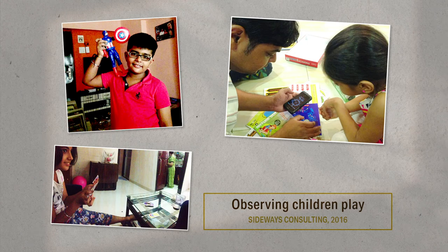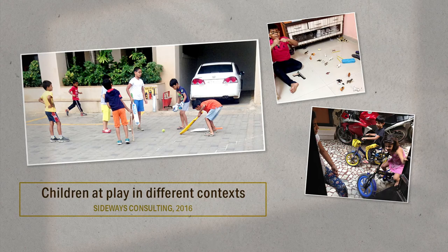Let us return to Neha Parikh's project on designing a low-cost toy for children. We learned earlier how and why Neha settled on the ethnographic approach for research into play and play-like activities. In designing her research, she chose to look at various locations outside of schools where children carried out such activities. This brought within her ambit homes, playgrounds, common areas such as corridors and stairwells in apartment buildings, and neighbourhood parking lots.